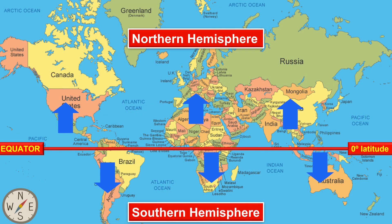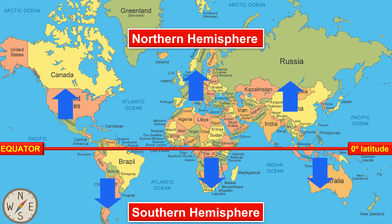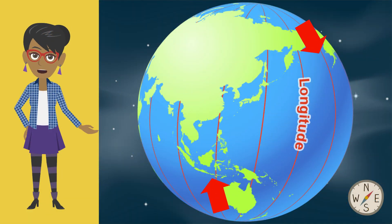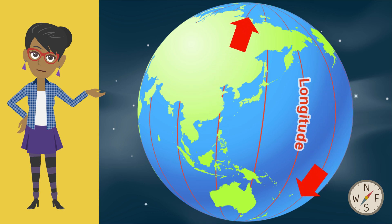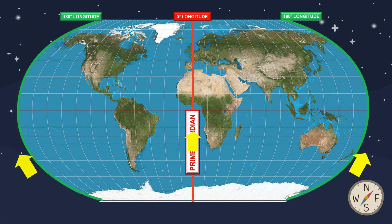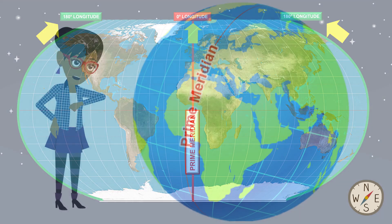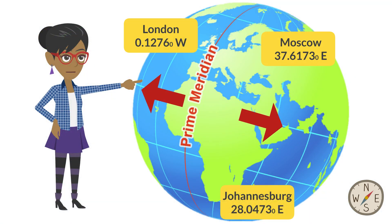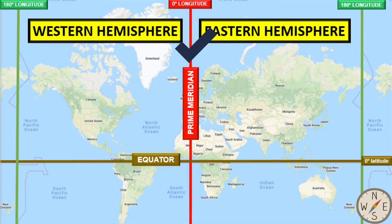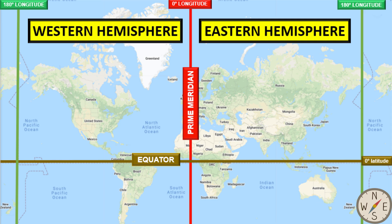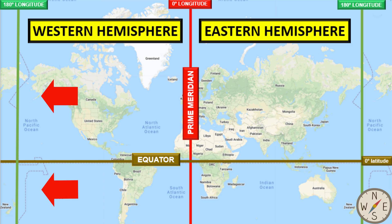Places north of the equator are part of the northern hemisphere, while places south of the equator are in the southern hemisphere. The imaginary lines running vertically from north to south and south to north around the Earth are called lines of longitude or meridians. Longitude is expressed in degrees and ranges from zero degrees at the prime meridian to 180 degrees west or east of the prime meridian. The lines of longitude measure how far east or west a town, city, or country is on the planet in relation to the prime meridian. The zero degrees and 180 degrees lines of longitude divide the planet into a western hemisphere and an eastern hemisphere. The western hemisphere lies west of 0 degrees longitude and east of 180 degrees longitude.